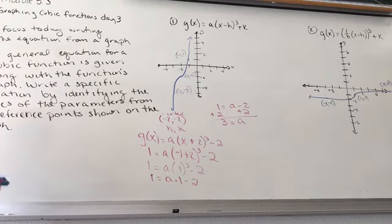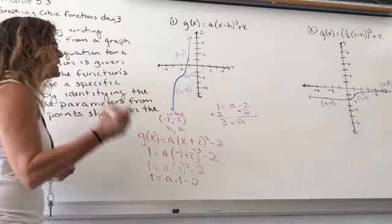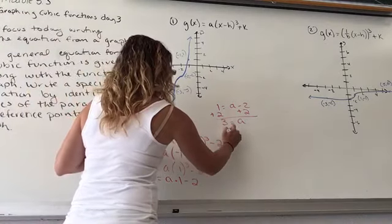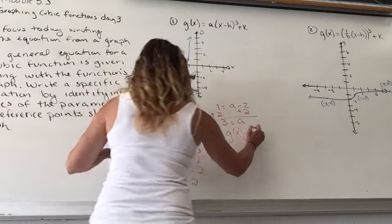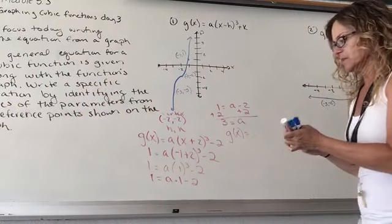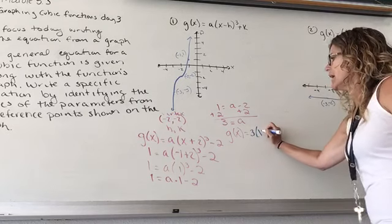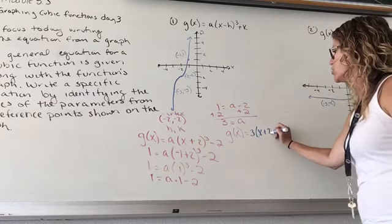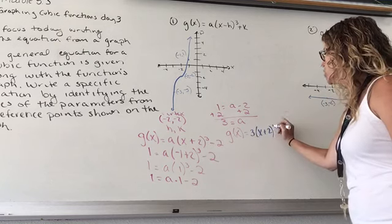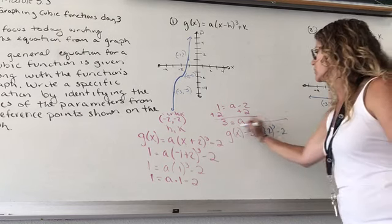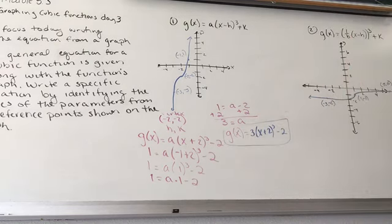Now, I know what A is. I know what H is. I know what K is. I can go back and finish writing my equation. G(x) = 3(x + 2)³ - 2. There is your specific equation for that graph.